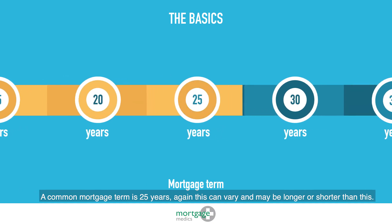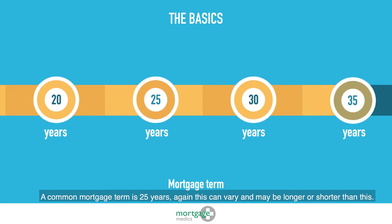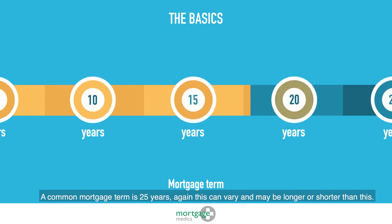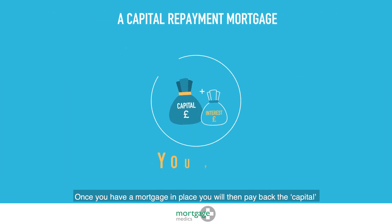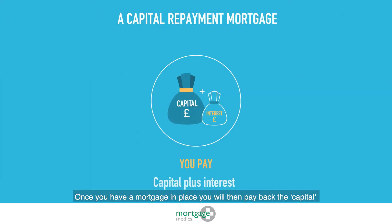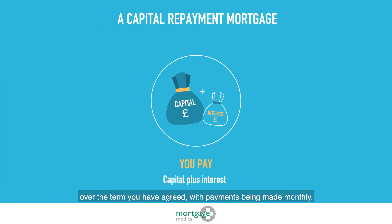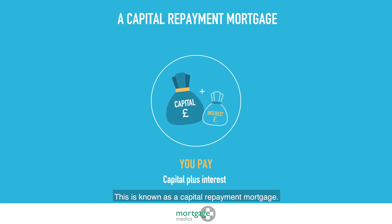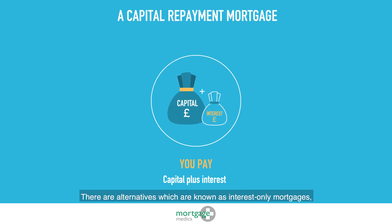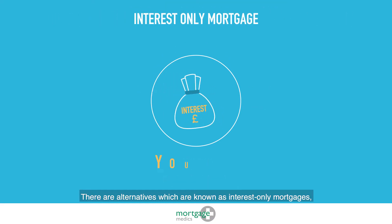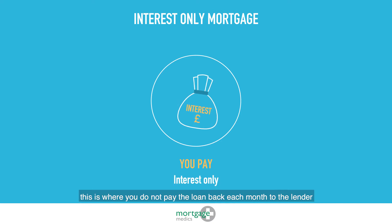A common mortgage term is 25 years, though this can vary and may be longer or shorter. Once you have a mortgage in place, you will then pay back the capital over the term you have agreed, with payments being made monthly. This is known as a capital repayment mortgage.